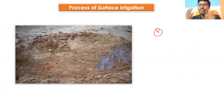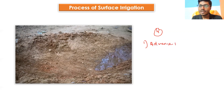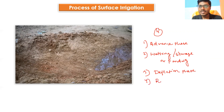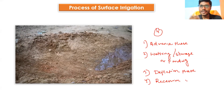Coming to the different phases of surface irrigation — surface irrigation generally occurs in four different phases. The first phase is the advance phase. The second phase is the wetting phase, or storage phase, or ponding phase. The third phase is the depletion phase. And the fourth or last phase is the recession phase.